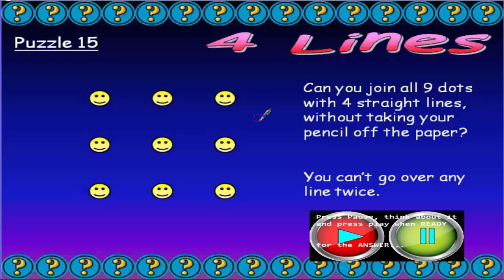Here by the smiley faces. We've got to join all nine dots with only four straight lines without taking your pencil off the paper, and you can't go over any line twice. So all nine dots need to be joined with only four straight lines, can't take your pencil off the paper.